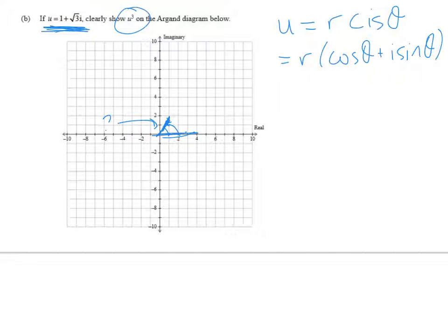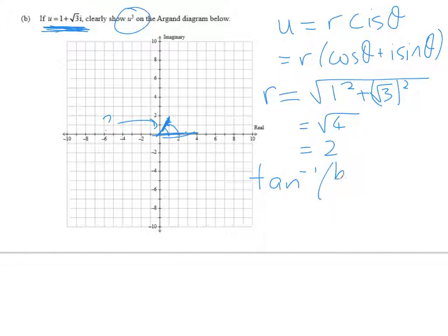So if we're going to do this the slow and clunky way, we would go that r is equal to 1 squared plus root 3 squared, which is the square root of 4, which is 2. And to figure out the angle, we can go tan inverse of b over a, which is equal to tan inverse of root 3.